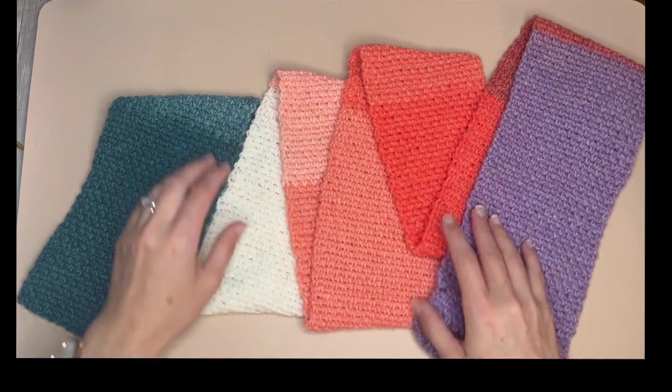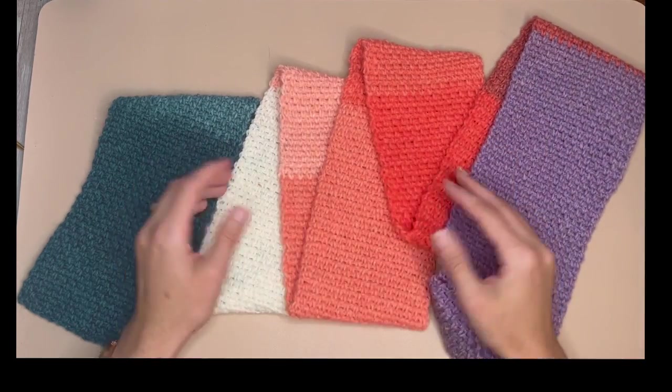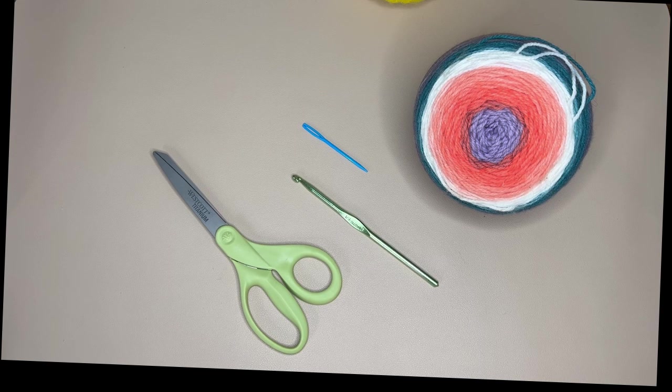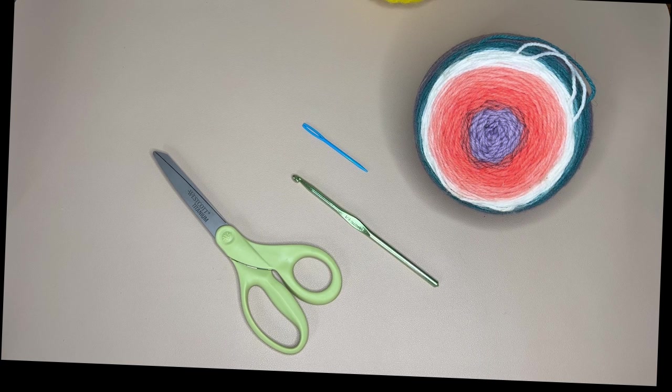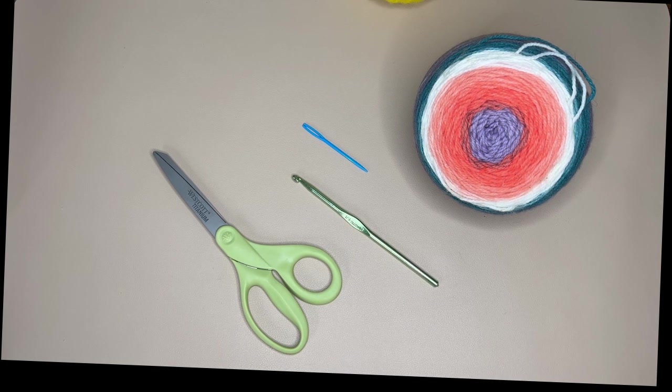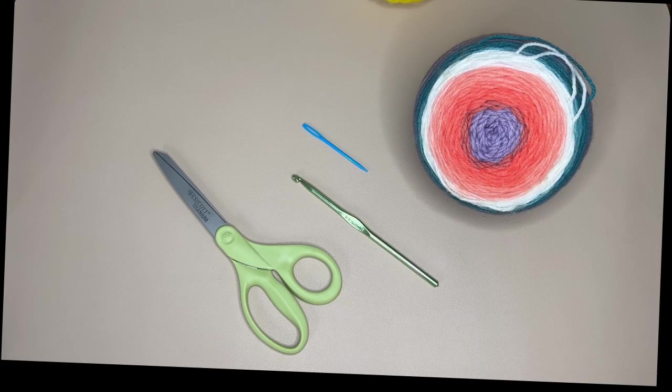All right so why don't we move into what we're going to be needing to make this. For this project we are going to be using any kind of self-striping yarn. I'm going to be using the mandala patterns for my self-striping yarn. And then we're also going to be using the crochet hook I or the 5.25 millimeter, some scissors and a tapestry needle.